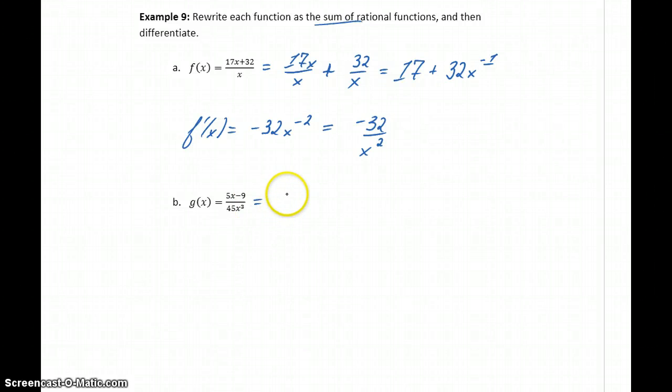Similarly in part b, we can write this as 5x over 45x cubed minus 9 over 45x cubed. So as long as we just have one term in the denominator, we can always break that up. And this will reduce to 1 over 9x squared minus 1 over 5x cubed.